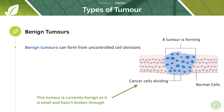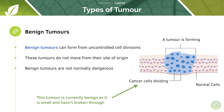You may have heard the term benign tumour. Benign tumours can form from uncontrolled cell divisions. The key thing to remember about benign tumours is that they tend to stay in one place — often they may be encapsulated by a membrane, for example. This means the tumour cells remain at their site of origin and tend not to normally be dangerous. Notice how the cells are all grouped together in their locality — this is your benign tumour.